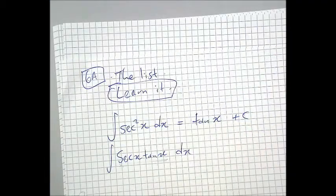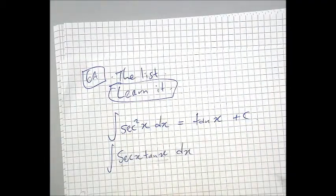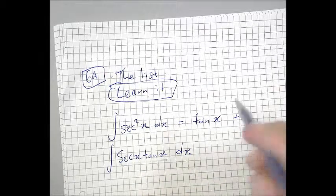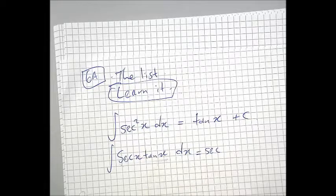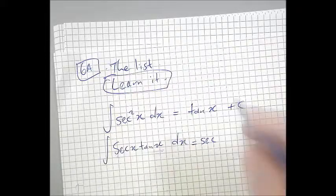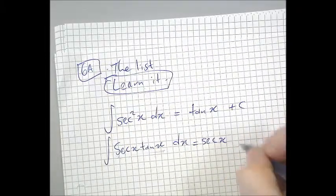So in 6a there's this list and you just learn it. For example, that's something in the list that's probably pretty well known. A thing that's not so well known is that Sec X Tan X is not some complicated thing from 6d or 6e, it's just plain old Sec X.